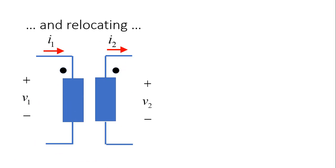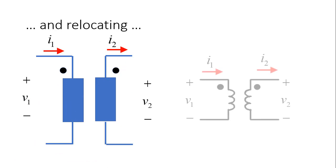Another symbol that is very popular for the ideal transformer shows the two voltages V1 and V2 and the two currents I1 and I2, with the dots marking which side is up on the primary and on the secondary.